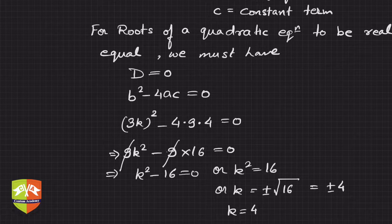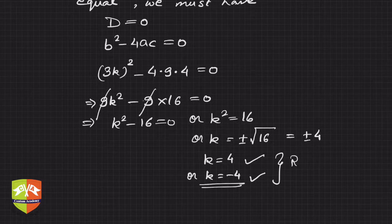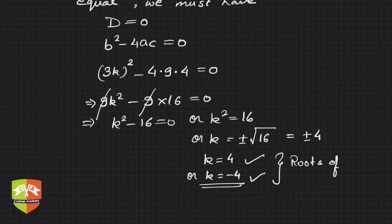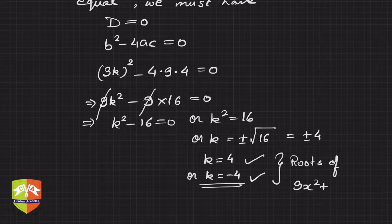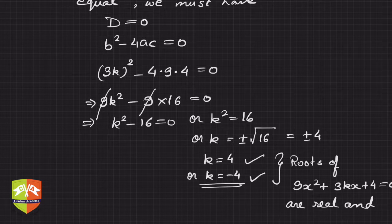So k could be either 4 or minus 4. In both these cases, there will be two cases: k equals 4 and k equals minus 4. In both cases, the roots of the given equation — 9x squared plus 3kx plus 4 equals zero — will be real and equal.